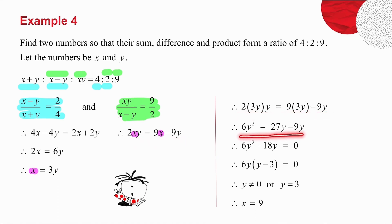I then multiply, set up my quadratic, factorize, and I get my two values for y. Have a look. If y equals 0, then x is going to equal 3 times 0, which is 0. So then my numbers are 0 and 0. 0 plus 0 is 0, 0 minus 0 is 0, 0 times 0 is 0.